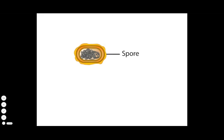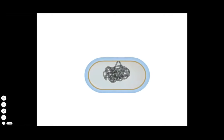When starved for nutrients, certain gram-positive genera, including some important pathogens, can develop dormant heat and desiccation-resistant spores. Most of our knowledge of bacterial sporulation comes from the gram-positive soil bacterium, Bacillus subtilis.